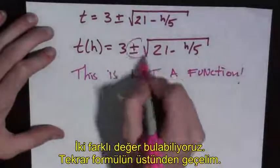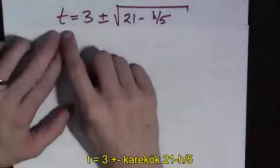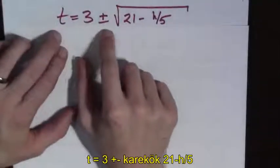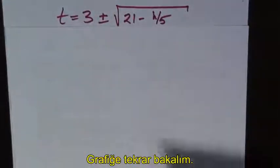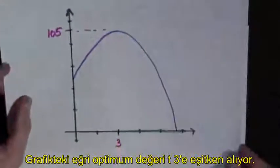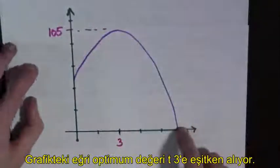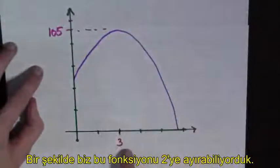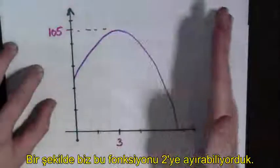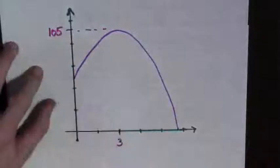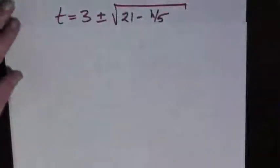There are two output values. So now let's back up to when t equals 3 plus or minus the square root of 21 minus h over 5. Looking at the plot again and taking it as a given that this curve reaches its maximum value when t equals 3, we see that somehow we should split the domain this way and this way. So let's look at what happens.